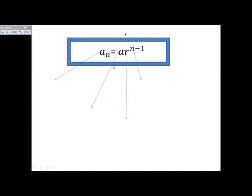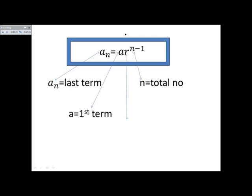Again, the same formula: aₙ = a · r^(n-1), where aₙ is the last term, n is the total number of terms, a is the first term, and r is the common ratio. By the help of this formula we can find four things: last term, total number of terms, first term, and common ratio.